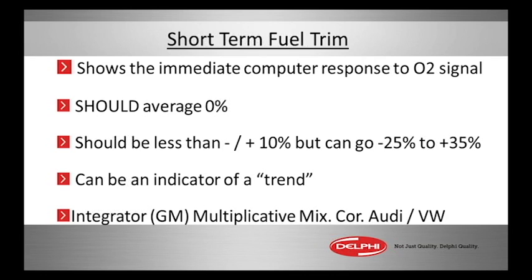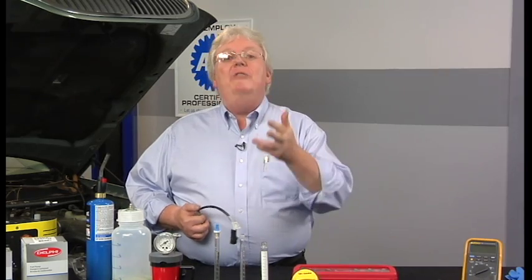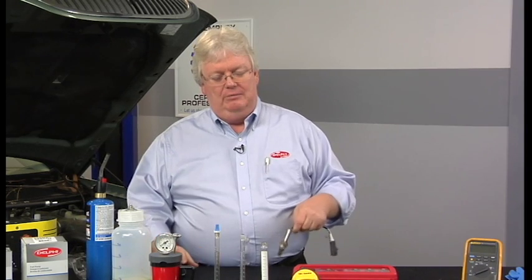It's an indication of the trend and what's going on with the engine, and it's an old term. In OBD1 days, if you're an older tech like me, you remember the integrator — that was the same as fuel trim, with 128 being the magic number for General Motors. VW and Audi call it multiplicative mixture correction.